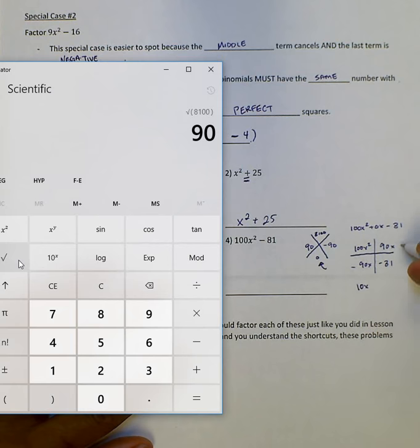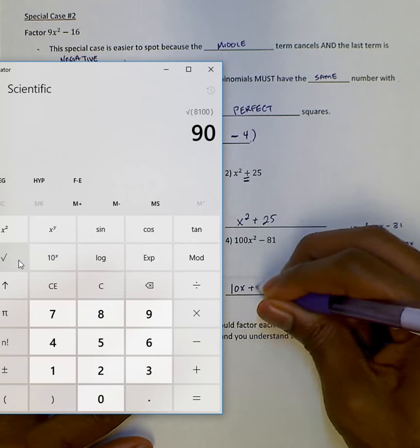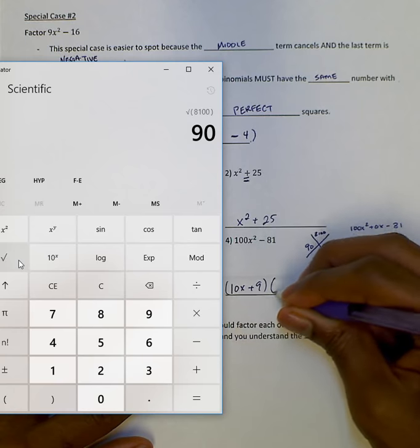Then I'd go through each row and each column and take out my GCF. So here's 10x, 10x, here is 9 and negative 9. So I have 10x plus 9 and I'd have 10x minus 9.